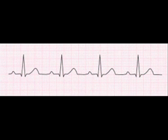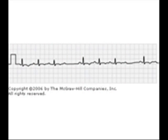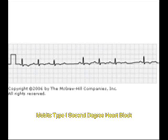In this EKG, you will see increased PR interval. You can observe how the PR interval is more than 0.2 seconds. Normal PR interval is between 0.12 to 0.2. So this is increased PR interval — that is characteristic of 1st degree AV block. Now, this is 2nd degree Mobitz type 1. In this, PR interval increases progressively and ultimately the P wave is dropped. This is Mobitz type 1.